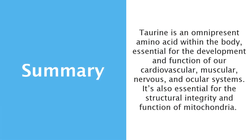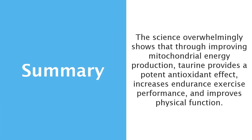In summary, taurine is an omnipresent amino acid within the body, essential for the development and function of our cardiovascular, muscular, nervous, and ocular systems. It's also essential for the structural integrity and function of mitochondria. The science overwhelmingly shows that through improving mitochondrial energy production, taurine provides a potent antioxidant effect, increases endurance exercise performance, and improves physical function.